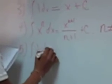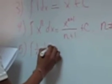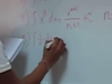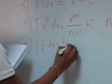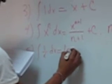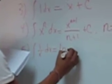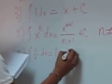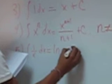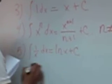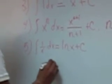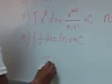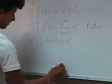The fifth rule is called the denominator rule. In this case, the exponent of x is negative 1. So the integral of 1 over x dx is the natural logarithm of x.